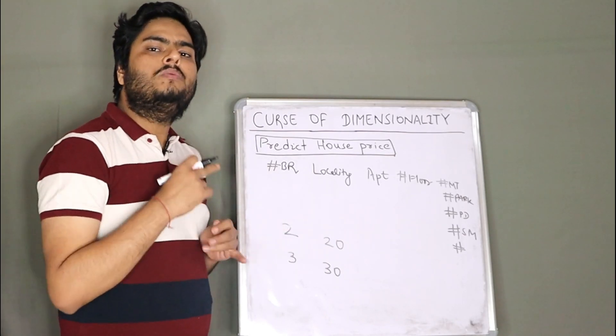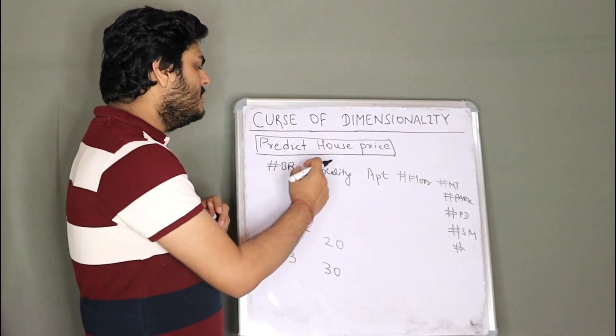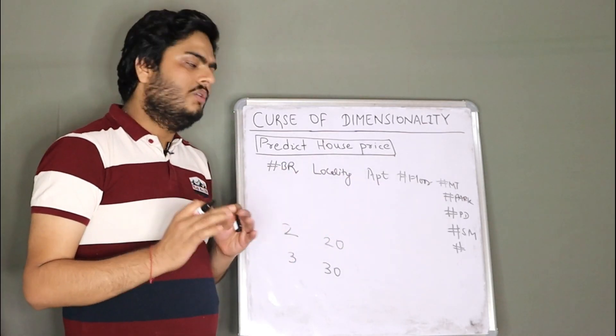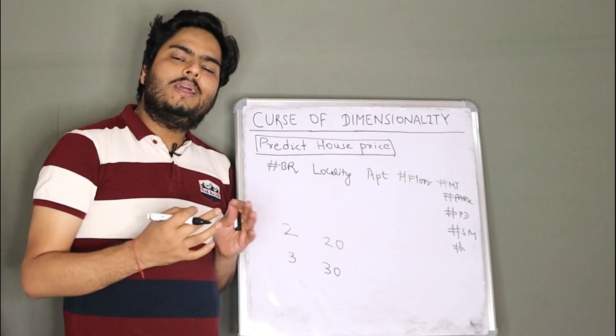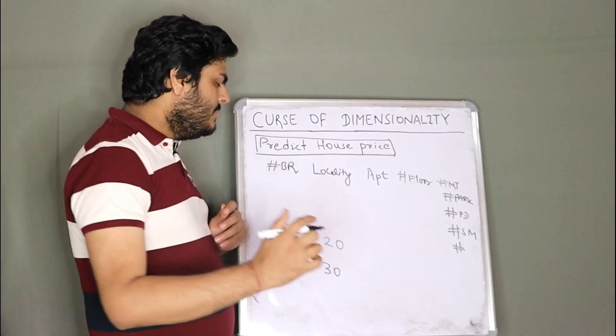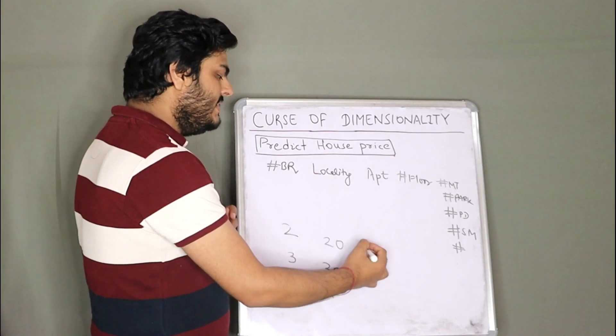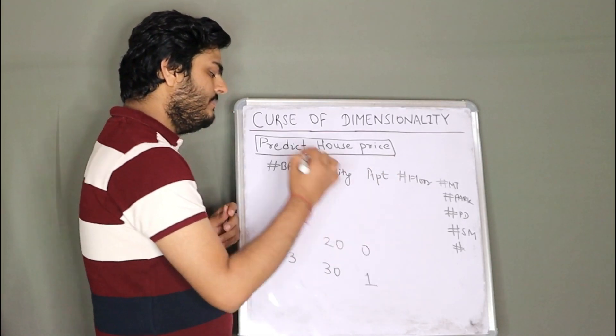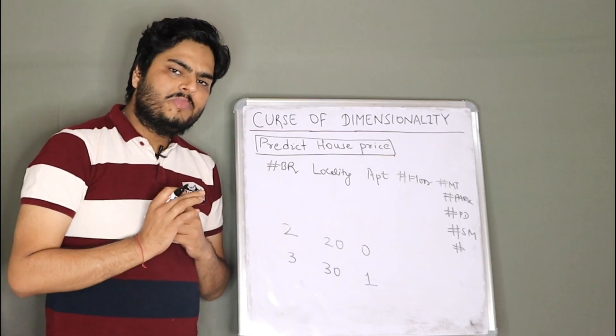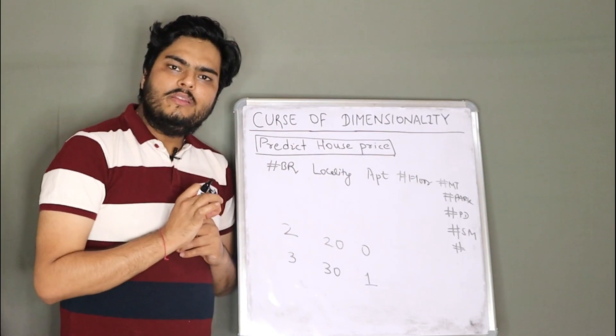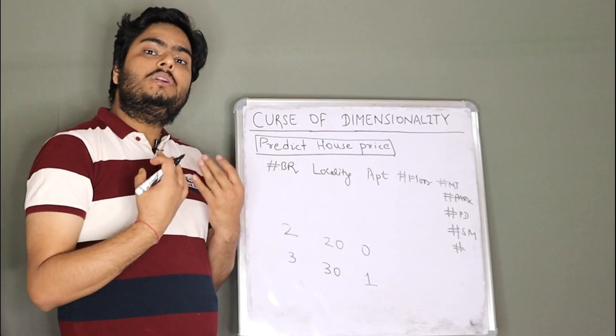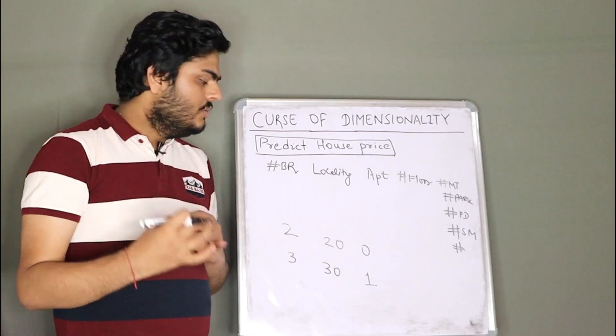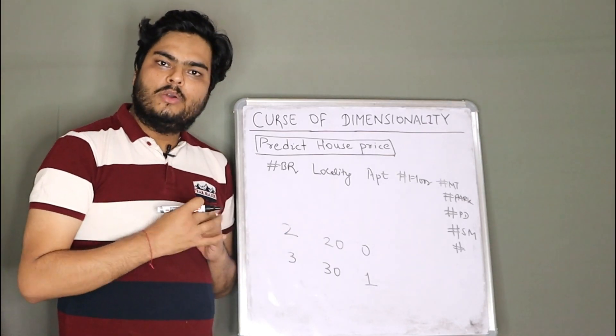So we add little more features, little more knowledge. Let's include one more variable here. One more variable is, is it an apartment or it's an individual house, or this one you can take locality. At the moment, I add this apartment flag here. So this is an apartment and this is not an apartment. Something like this. Now what will happen here is, there is more information to learn for the model, which might not be very useful for this prediction.